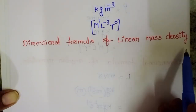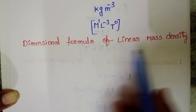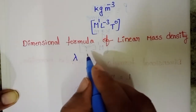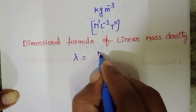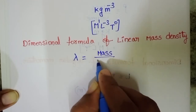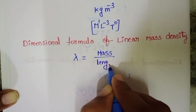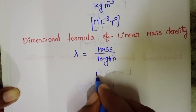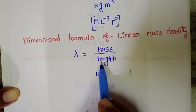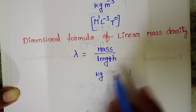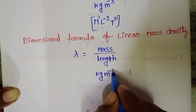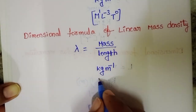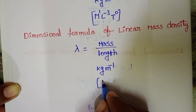The dimensional formula of linear mass density — linear mass density is denoted by the letter lambda. Lambda equals mass divided by length. The unit of mass is kg and the SI unit of length is meter, so kg per meter is the unit of linear mass density.